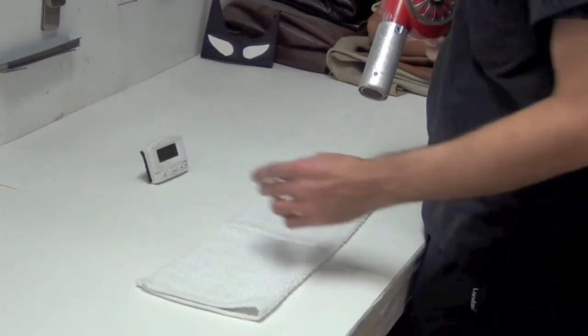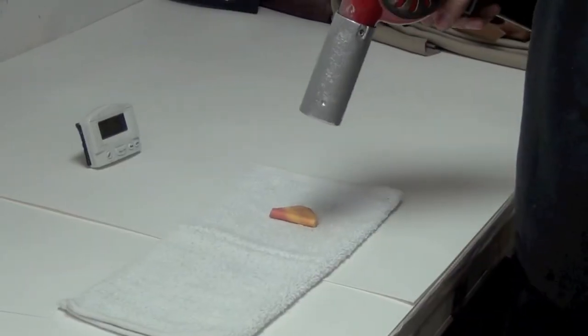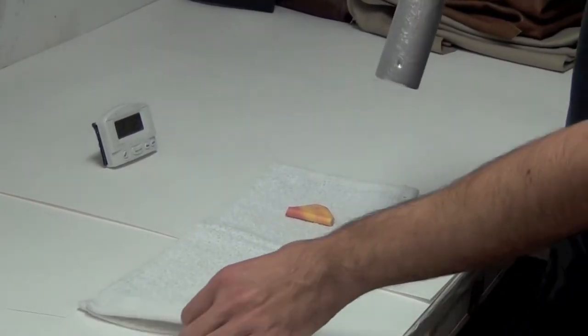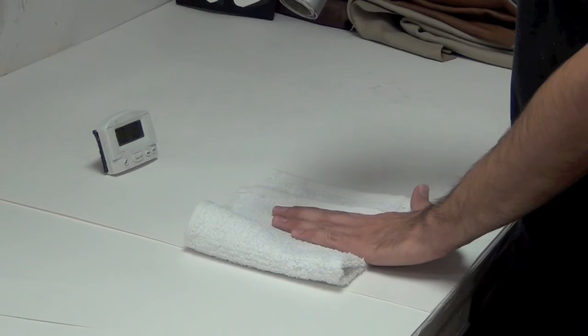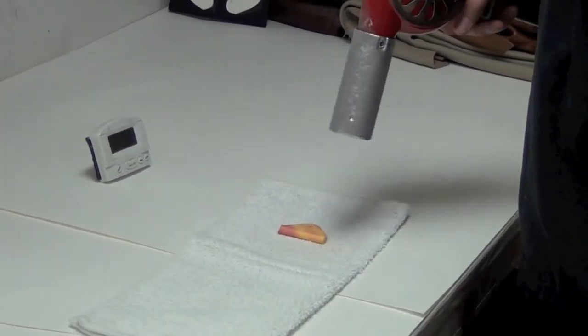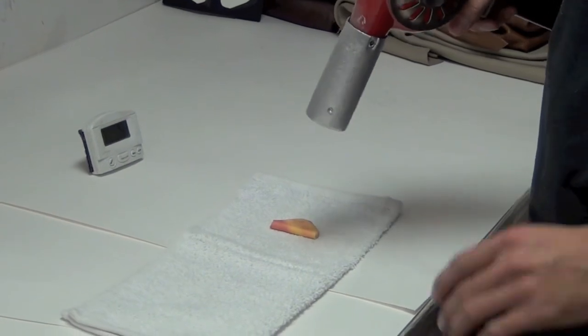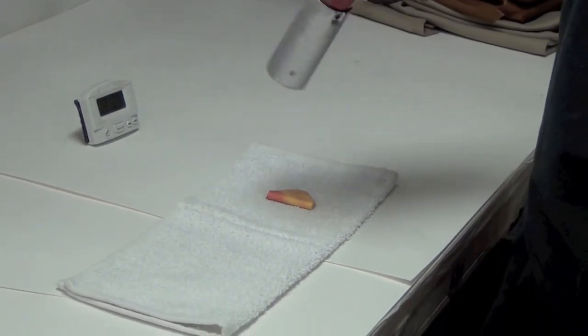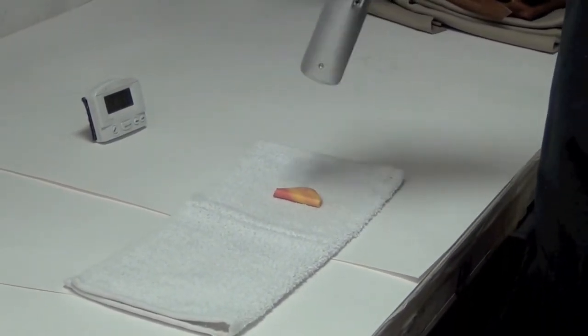And then start. You don't want to have your heat gun pointing directly at the chafe for more than about five seconds, I would say. Because you don't want to melt the chafe or burn the transfer paper or anything like that. Which is very easy to happen.